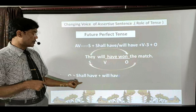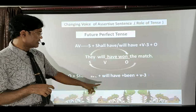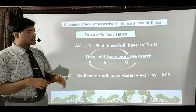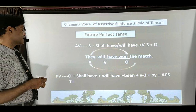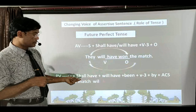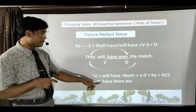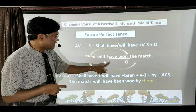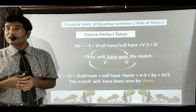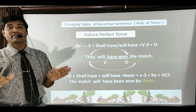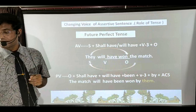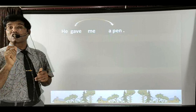Applying this formula: 'The match' (object first), 'will have' (can't use 'shall have' since subject is not 'I'/'we'), 'been' (extra word), 'won' (third form already available in perfect tense, no need to change), 'by them' (objective case of 'they'). So: 'The match will have been won by them.' This is how you convert sentences for all tenses into their respective passive constructions. Future Perfect Continuous Tense (Subject + shall have/will have + been + verb-ing) also does not have a passive voice.